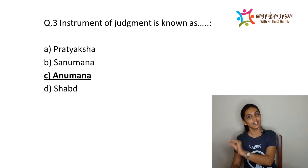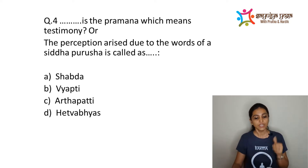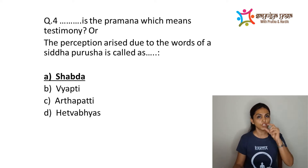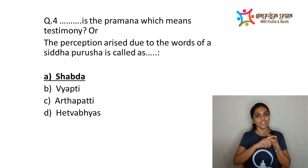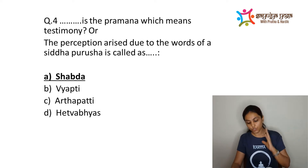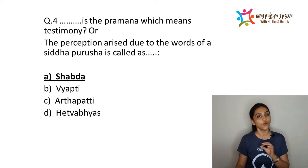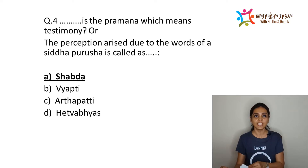Ye nahi anumiyate tada anumanam. The next question: the Pramana which means testimony or the perception arising due to the words of a Siddha Purush is called — options are Shabda, Vyapti, Arthapatti, or Hetva Vyas. The correct answer is Shabda. Shabda Pramana is nothing but Agama Pramana. Shabda Pramana is useful in circumstances where no sense evidence is available and when there are not sufficient grounds for inference — whenever there is no possibility of Pratyaksha or inference, Shabda Pramana comes into the picture.